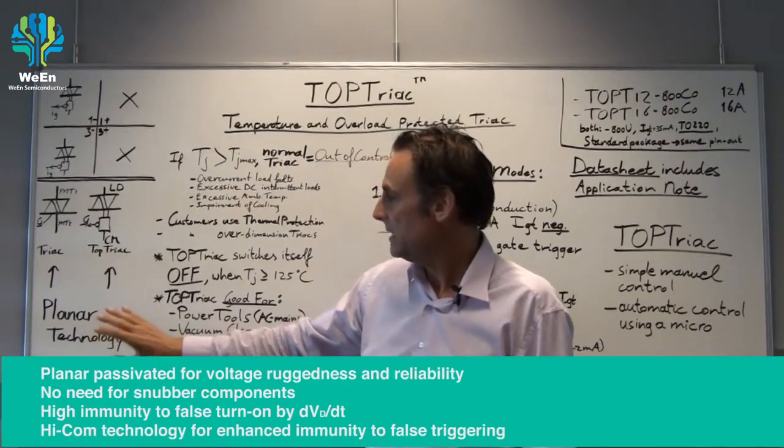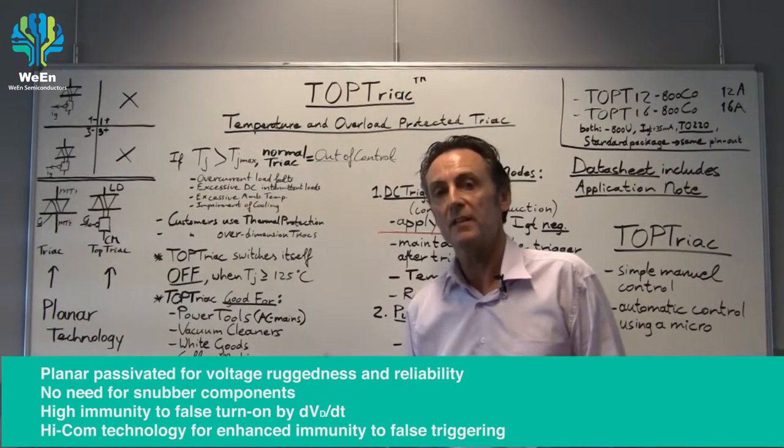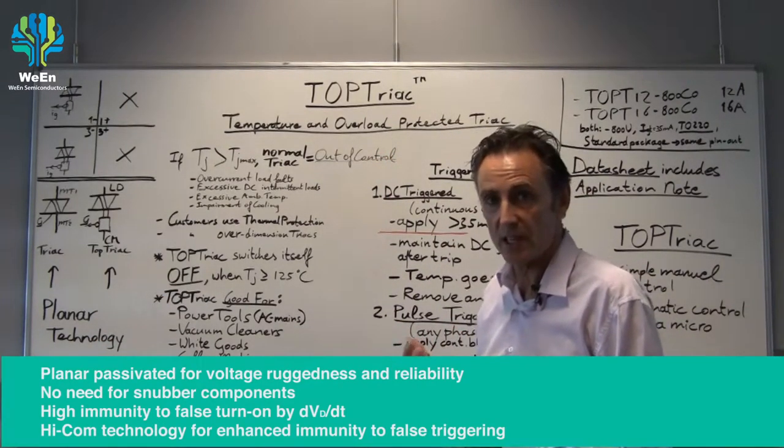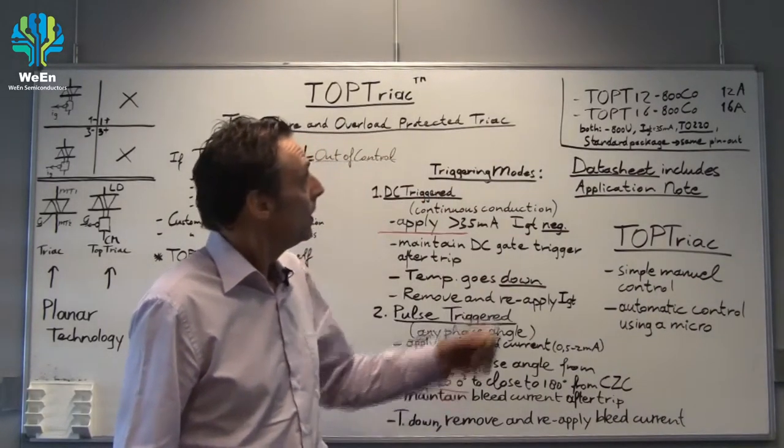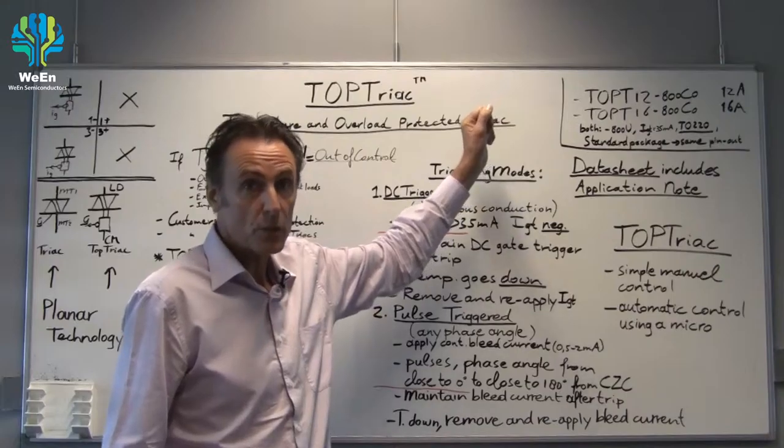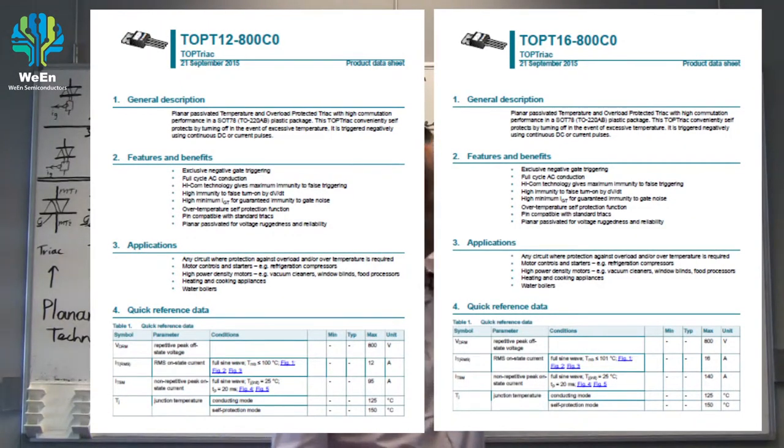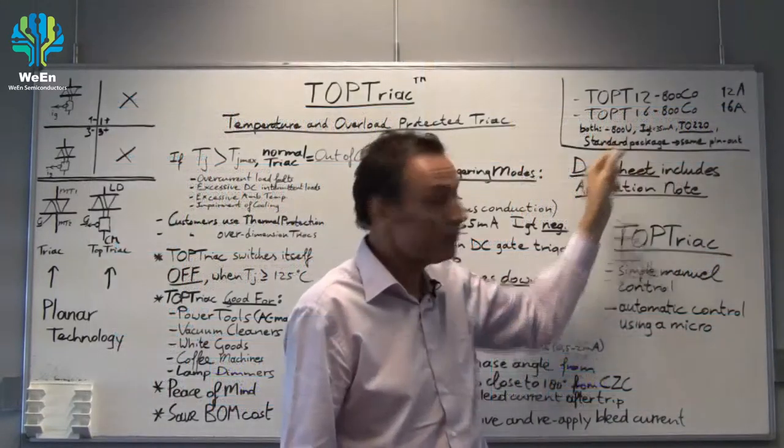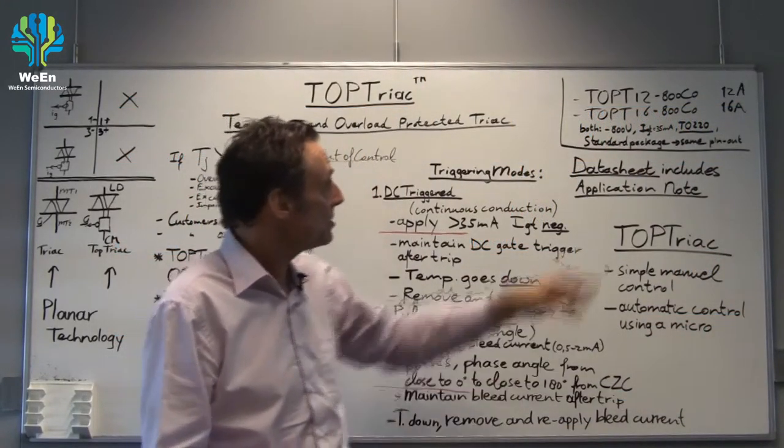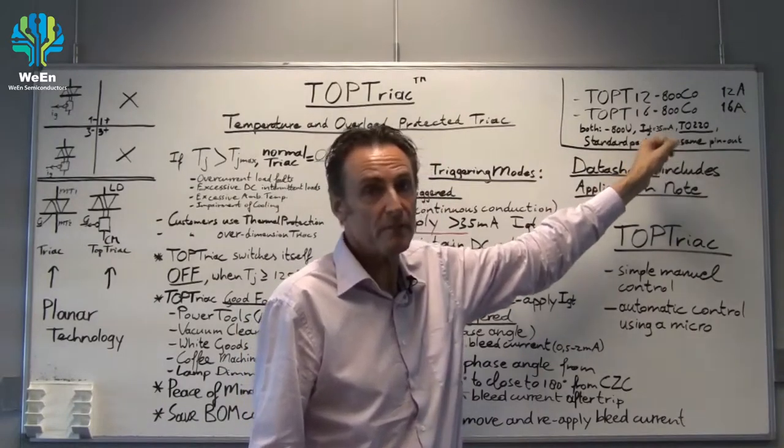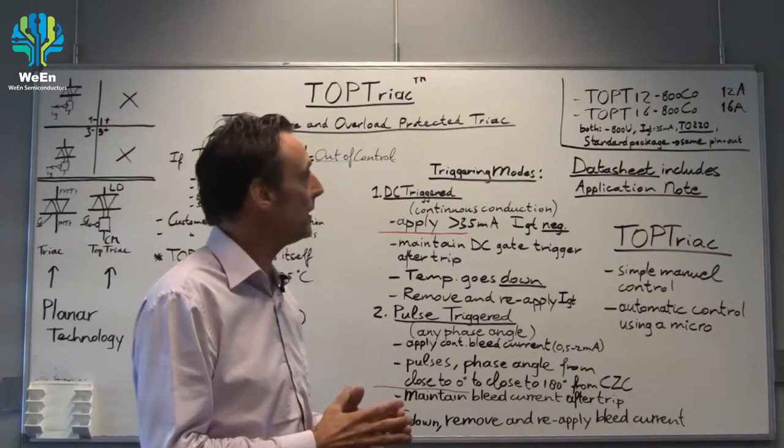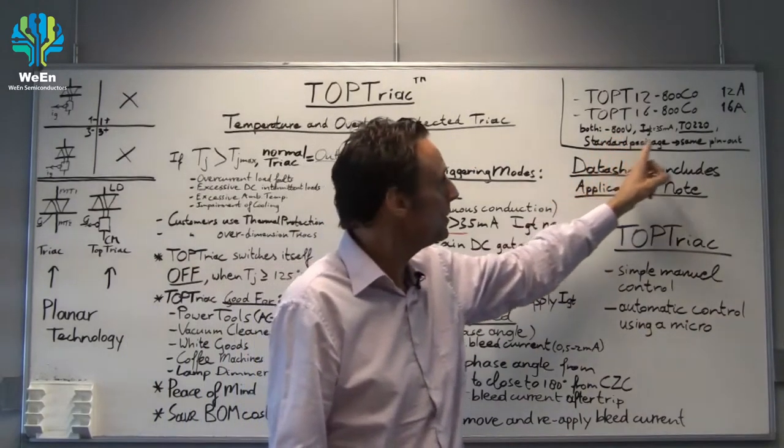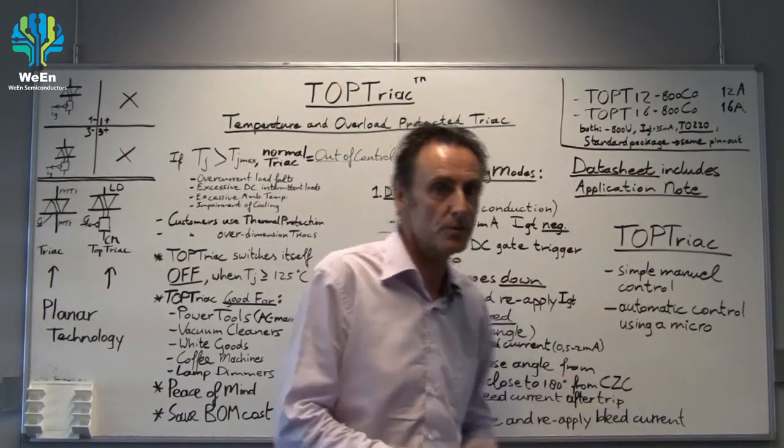TOP TRIACs are made in planar technology giving the best high temperature and high voltage ruggedness. We released two parts, 12 amp and 16 amp, they're called TOPT12800C0 and TOPT16800C0. Both are 800 volt, a sensitivity IGT of 35 milliamps, and come, and that's very important, in the normal TO220 package. The standard package with the same pinout as a normal TRIAC.